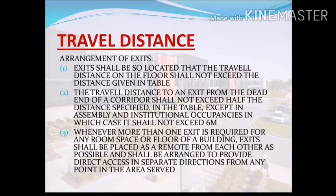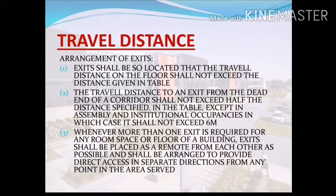The travel distance is referenced in Table 2 as per the National Building Code. The travel distance from the dead end of a corridor to the exit shall not exceed half the distance specified, except for assembly and institutional occupancies, in which cases it shall not exceed six meters. Whenever more than one exit is required for any room, space, or floor of a building, exits shall be placed as remote from each other as possible and arranged to provide direct access in separate directions from any point in the area served.